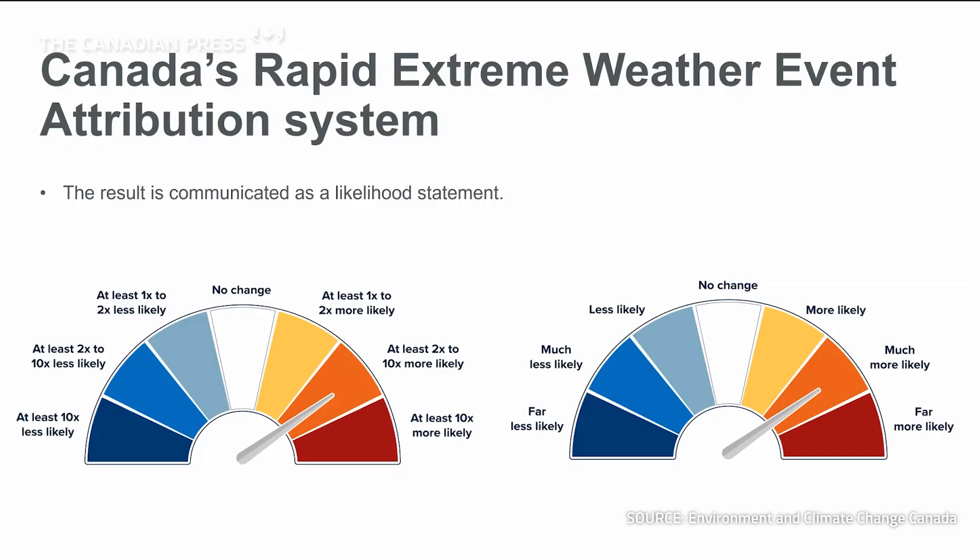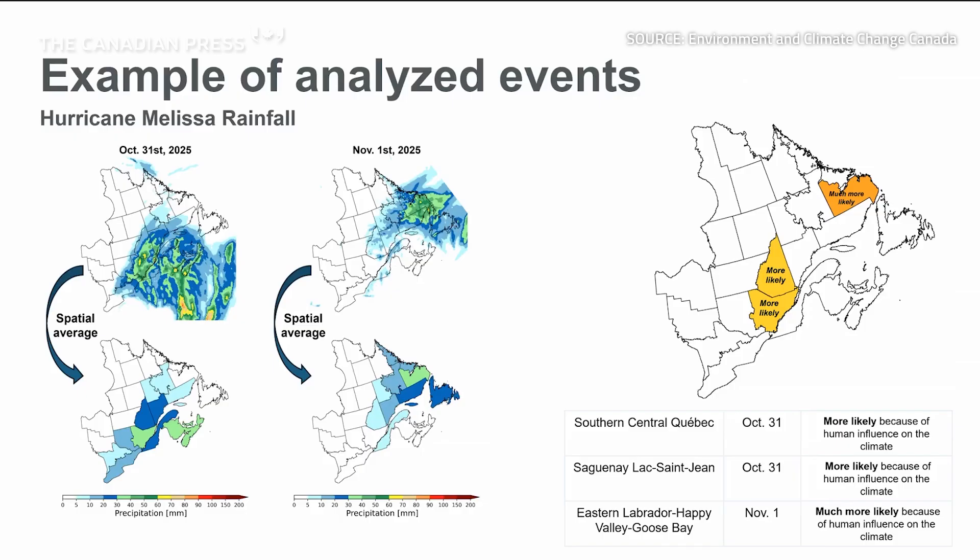Expressing the information the system provides in terms of simple statements gives Canadians direct insight into how climate change is affecting our lives and weather today. As an example of how the system works, we present the heavy rainfall episode caused by the passage of Hurricane Melissa over eastern Canada.